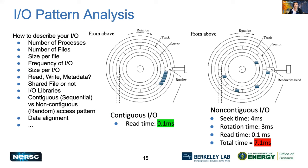Moving on to optimizing IO, when we want to optimize IO there are some questions that we need to answer: how many processes are writing to our files? How many files do we have? What's the size per file? What's the frequency of the IO? On older file systems like the community file system, there are considerations about doing contiguous IO versus non-contiguous or random access IO. But on newer storage like the all-flash Perlmutter scratch, doing random IO is more permissive and doesn't have such high cost.